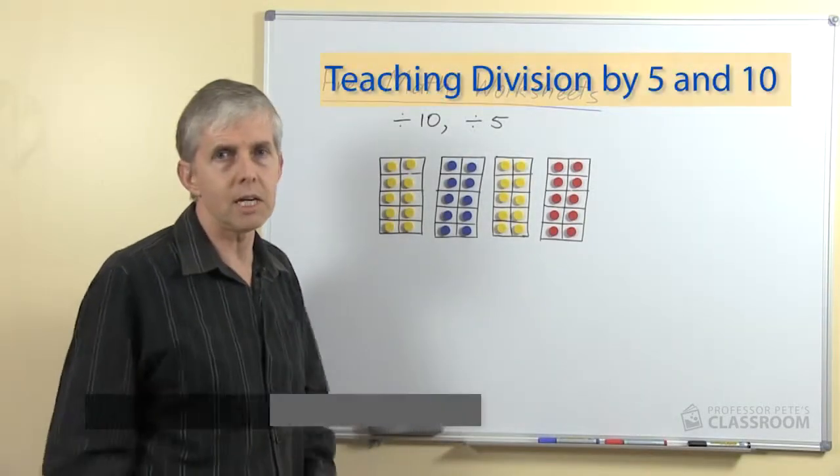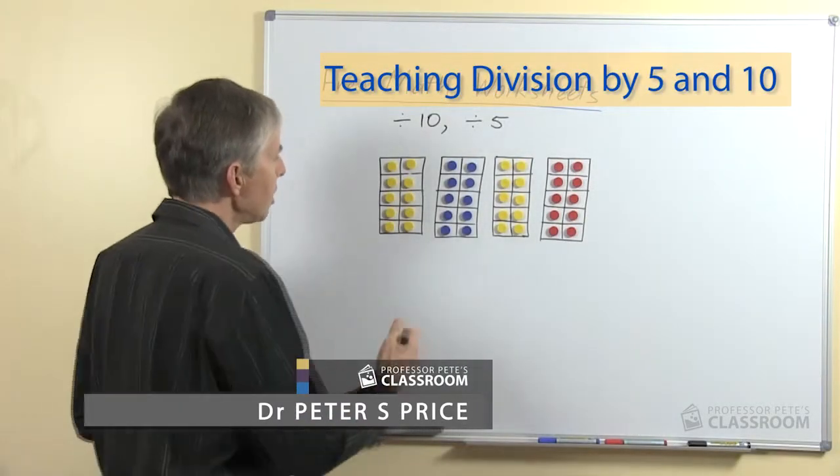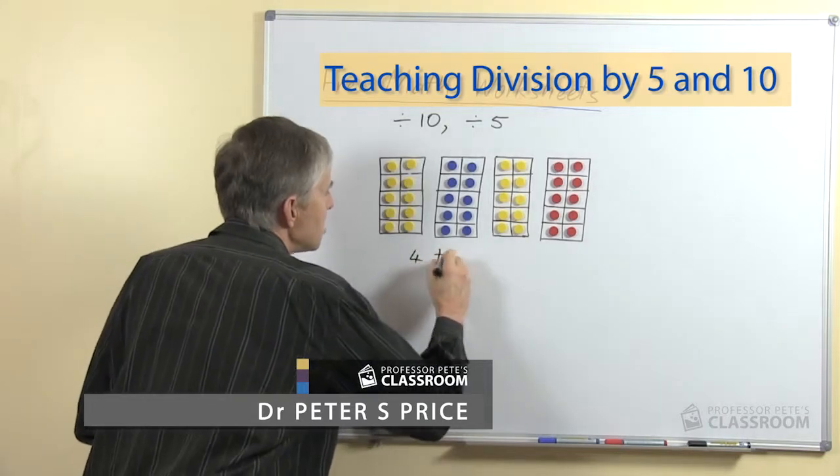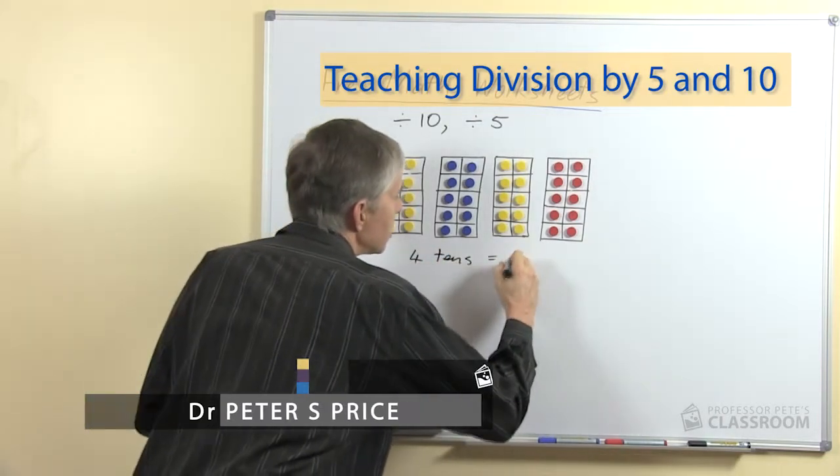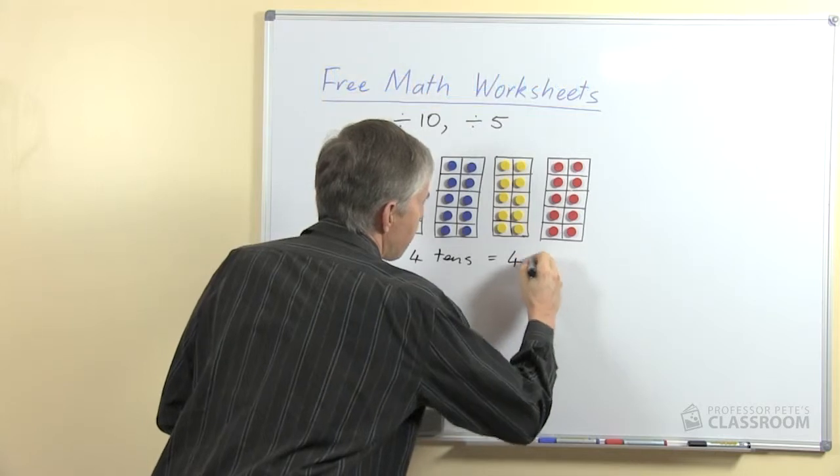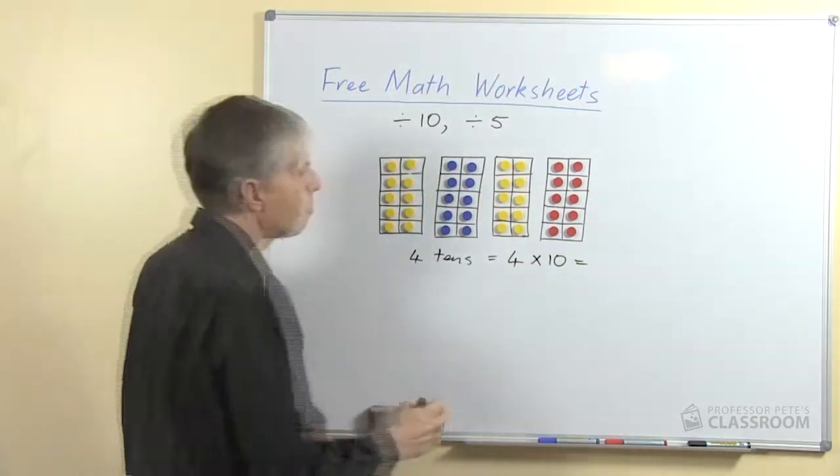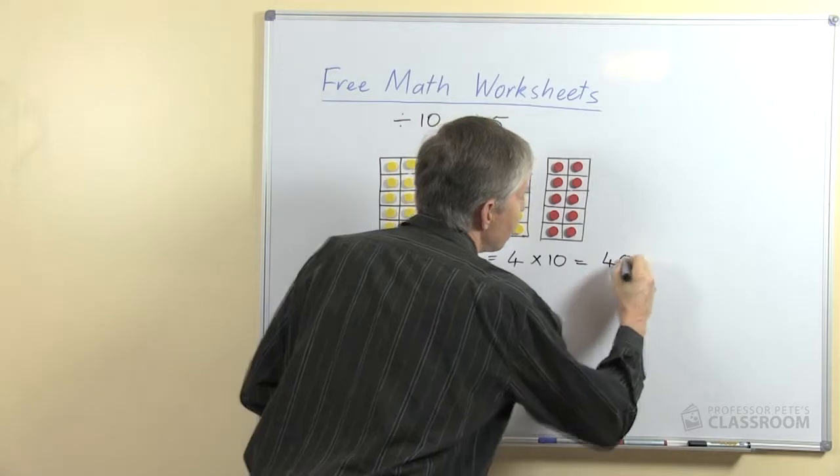Let's start again with our friends the 10 frames. Here we have 4 lots of 10. So we will have taught our students previously this sort of thing: 4 tens is the same as 4 multiplied by 10, we give it the name 40.